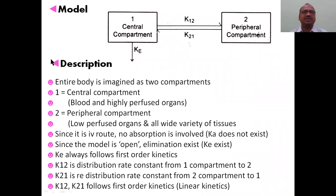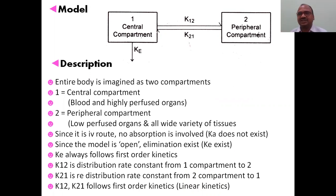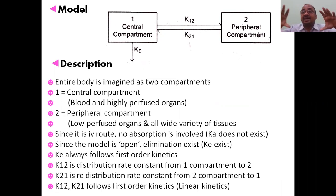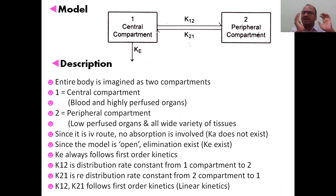In this model, we imagine the entire body as two compartments. The first is the central compartment, which consists of blood — that is, systemic circulation — as well as highly perfused organs where blood supply is high, such as the brain, lungs, kidney, and liver. These highly perfused organs are all grouped together in the central compartment.